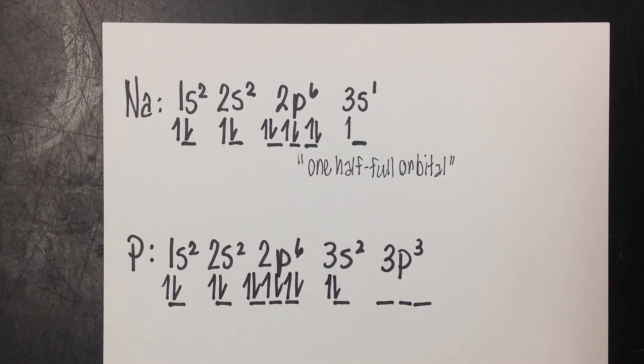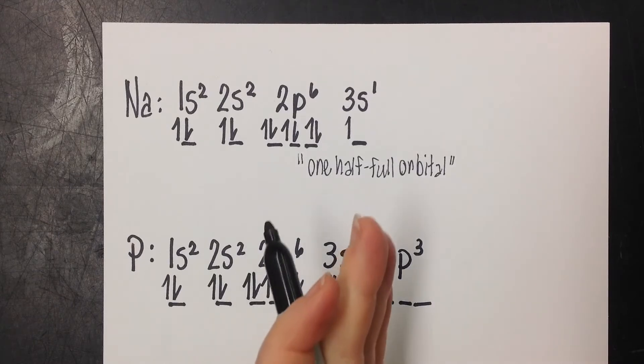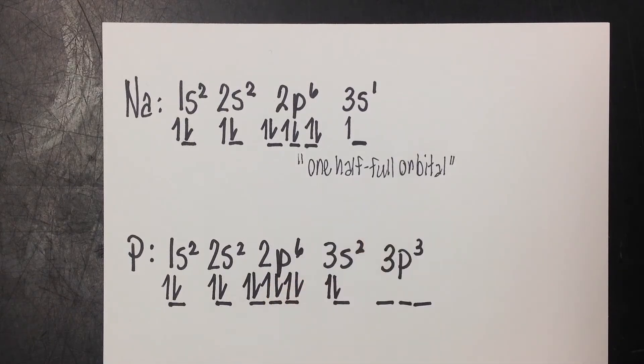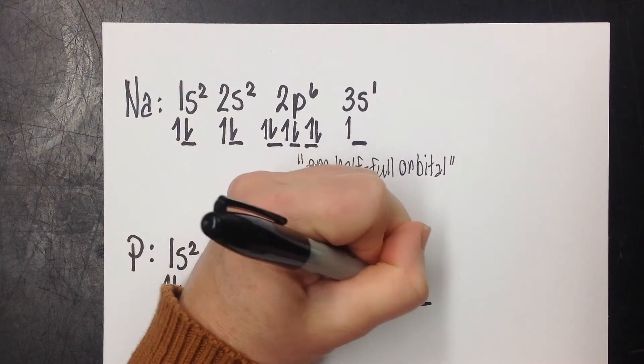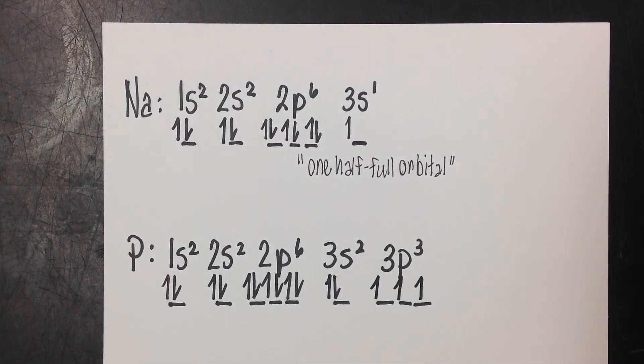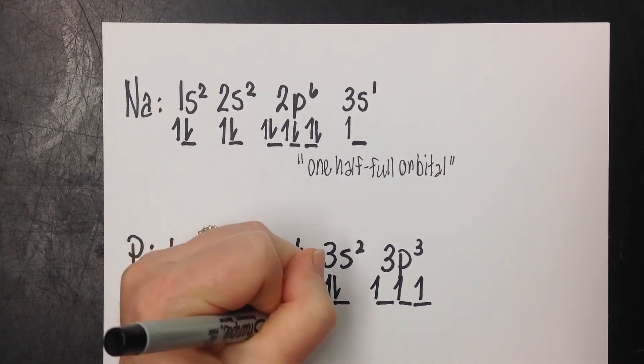Because if you are not in that habit, you might do this one wrong. We have three electrons that we've got to fill into these orbitals. But according to Hund's rule, we're going to have to give each one of these one electron before we double up. So 1, 2, 3. So what we have here are three half-filled orbitals.